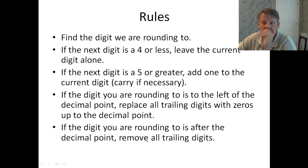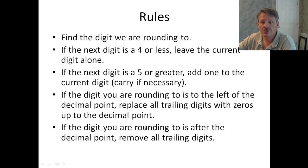So our rules: find the digit you're rounding to — I underlined those digits. If the next digit is a 4 or less, leave the current digit alone. If it's a 5 or greater, add one to the current digit. If the digit you're rounding is to the left of the decimal point, you have to add those placeholder zeros. Whereas if the digit you're rounding to is to the right of the decimal point, you can just remove all of the trailing digits — in fact, you have to just remove them.